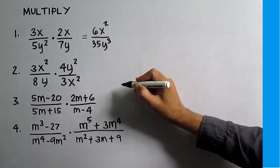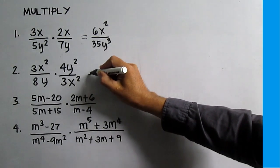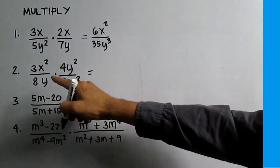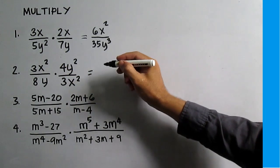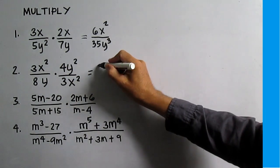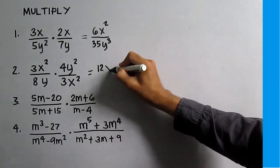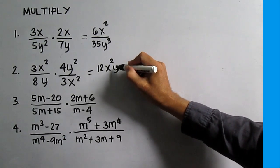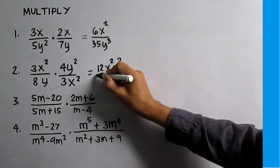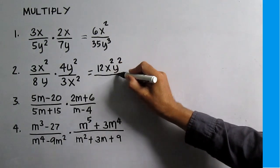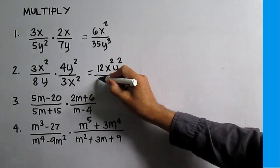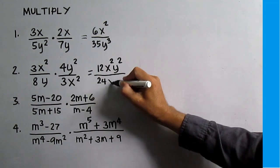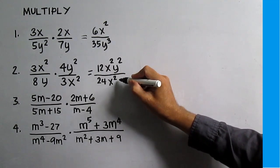Number 2: 3x squared over 8y times 4y squared over 3x squared. Multiply the numerators together to get 12x squared y squared. All over the denominators: 8 times 3 is 24, and x squared times y is x squared y.